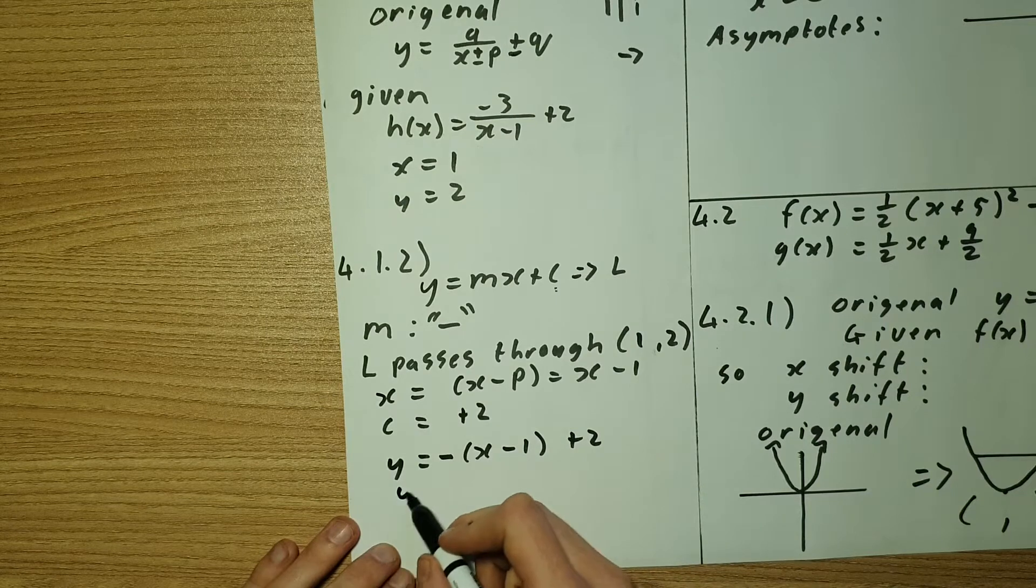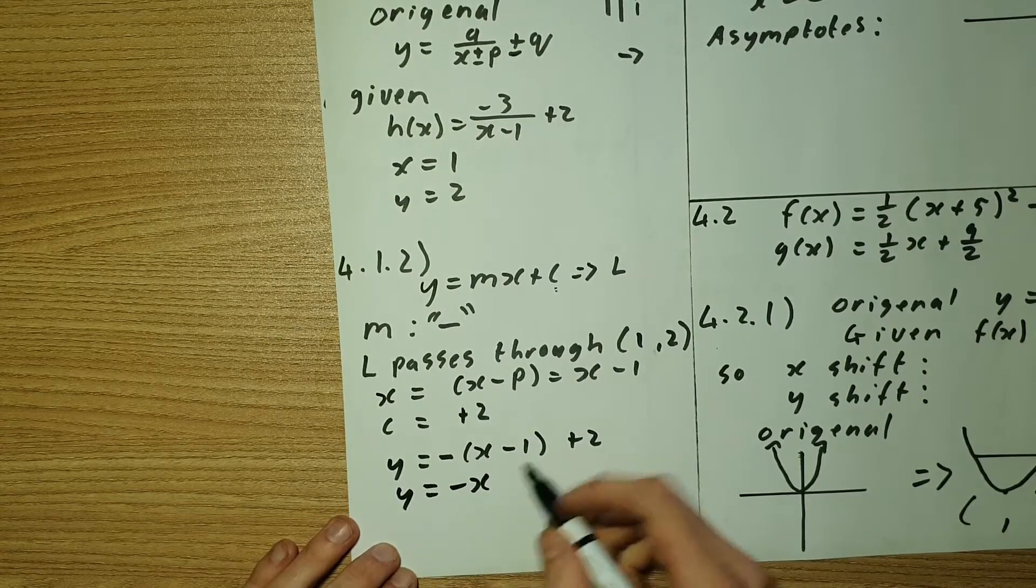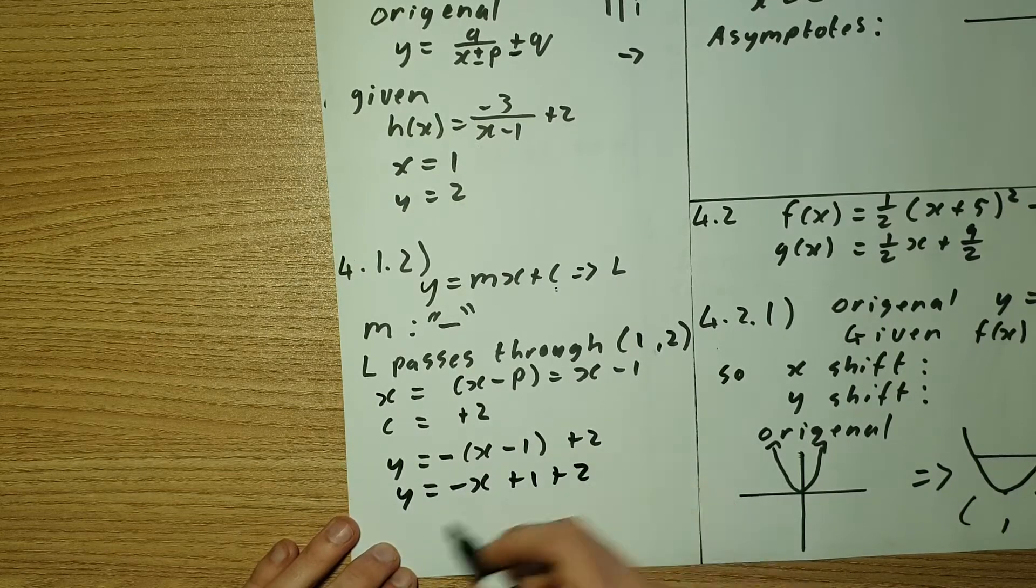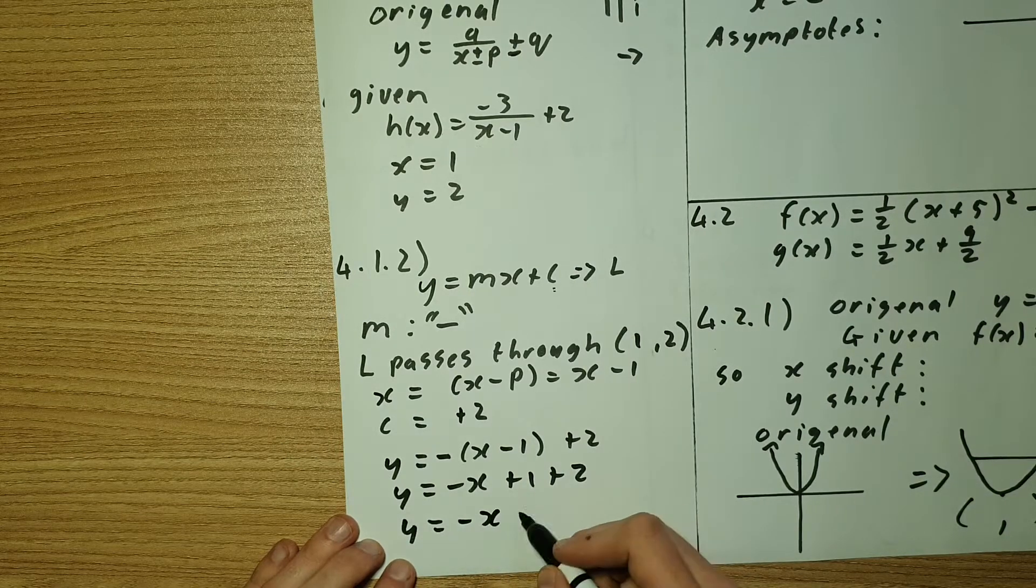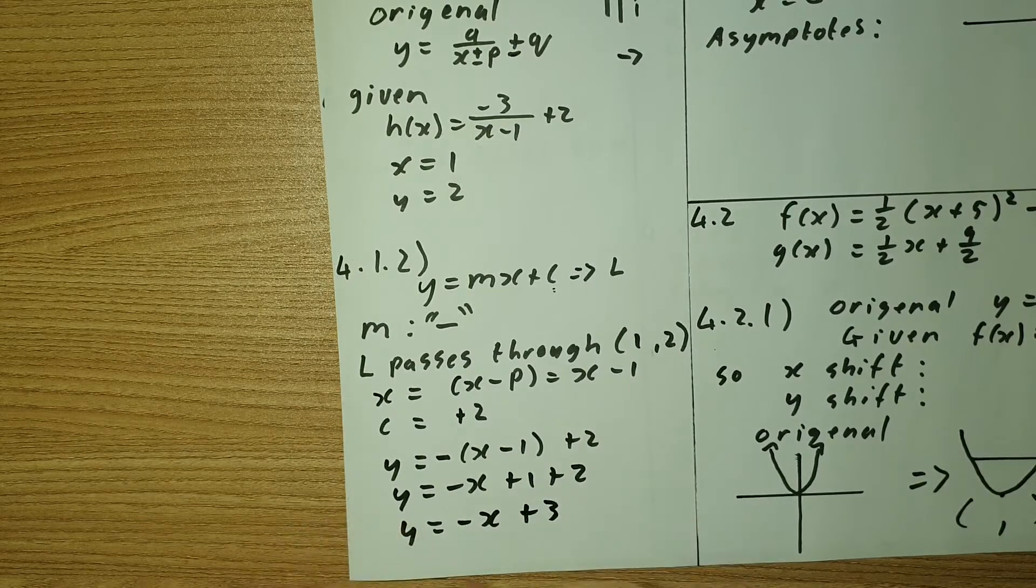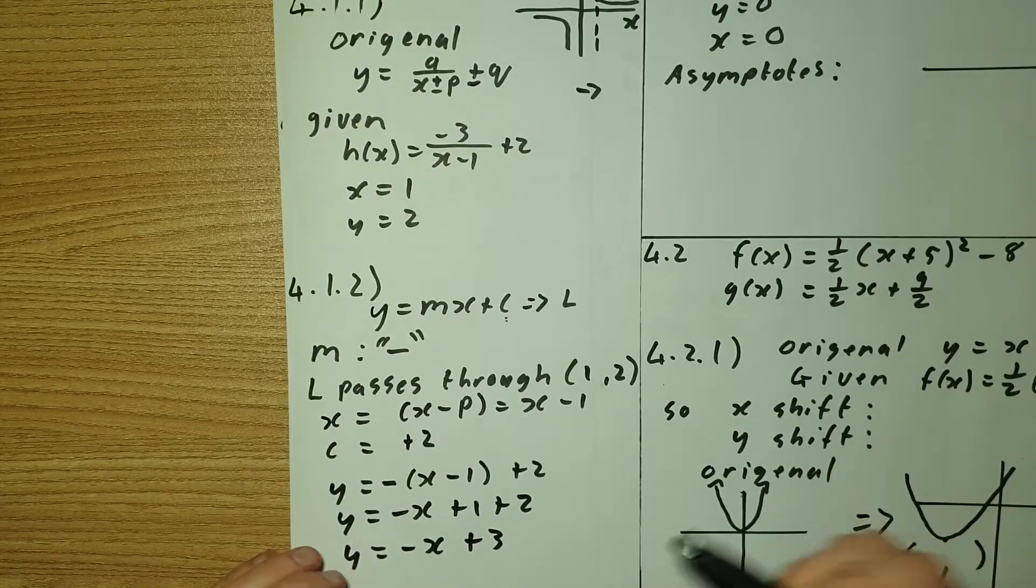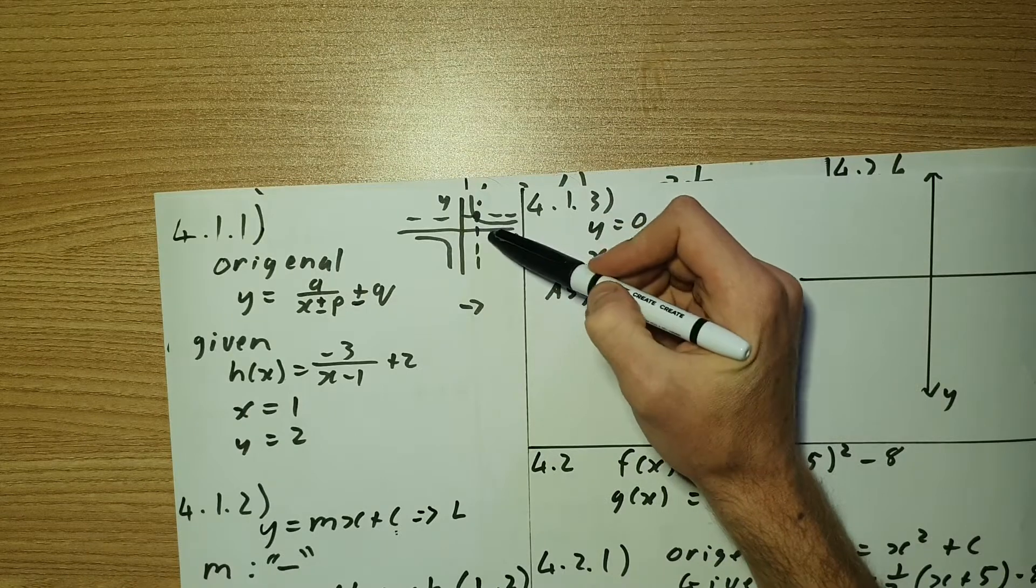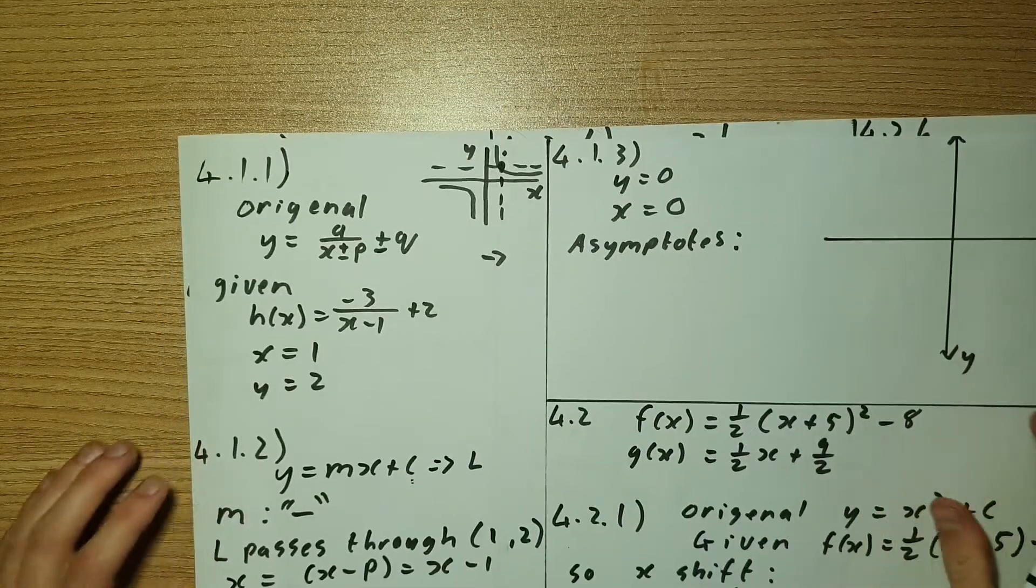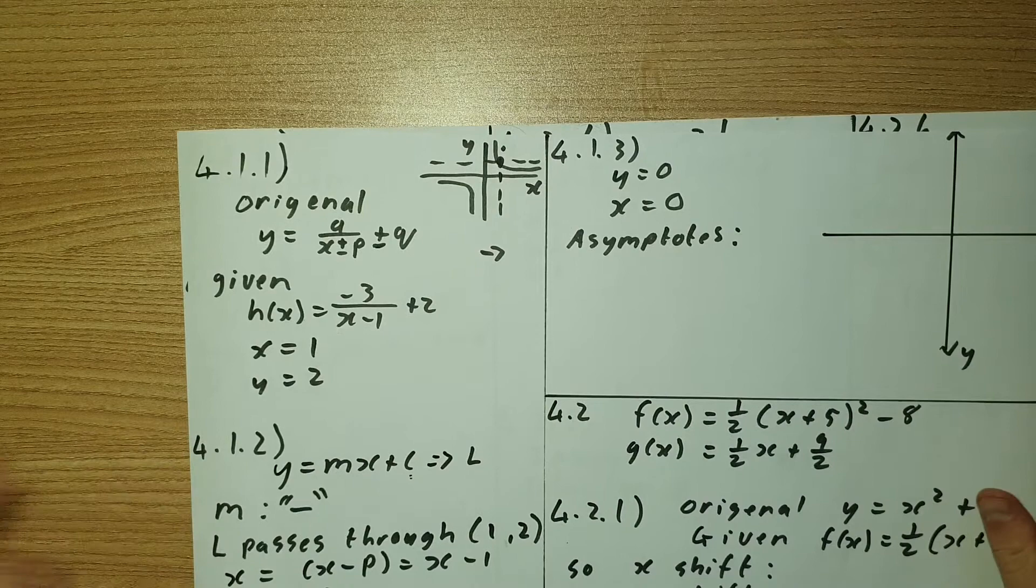So if we substitute everything in, we're going to have y equals to negative x plus 1 plus 2. So y equals to negative x plus 3. The other way you can work it out is if you look at the gradient passing through the point here, it's going to make a 45 degree angle and so on. So there are multiple ways of doing this.